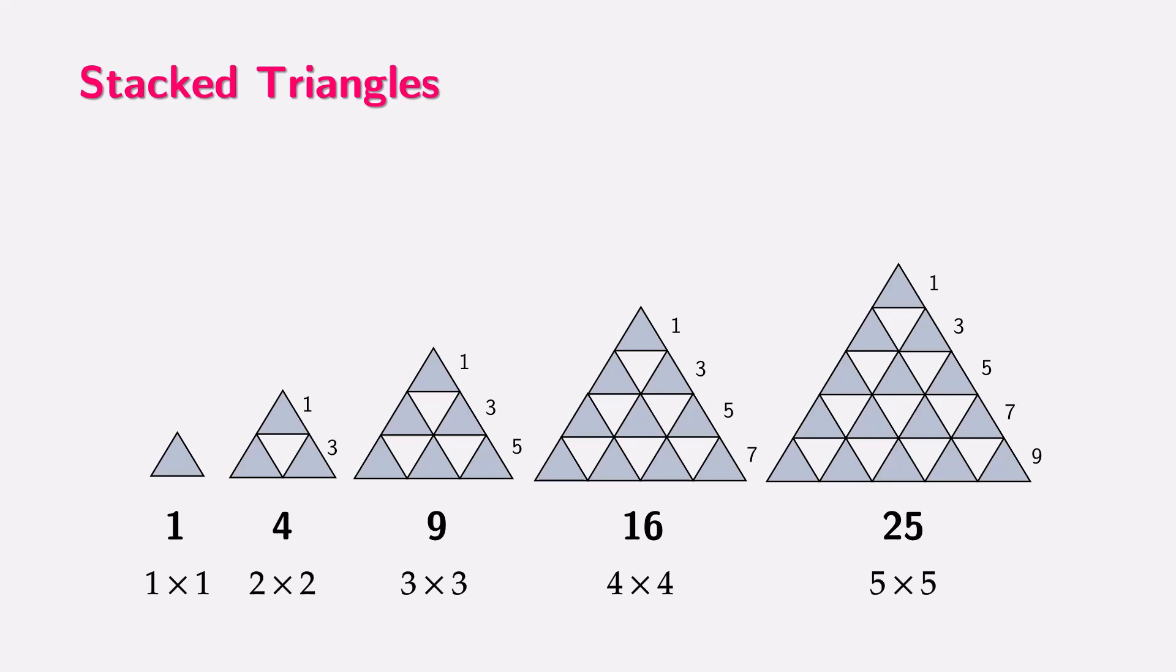The numbers one, four, nine, sixteen are all perfect squares. This happens because as we add each new row of triangles in increasing odd numbers, the overall shape forms a larger triangle that grows both wider and taller, forming a perfect square pattern in terms of the total count of triangles. So what we're seeing is how adding triangles in an odd number sequence creates shapes whose total number of triangles matches the square numbers. It's a wonderful example of how patterns in mathematics can reveal surprising connections.